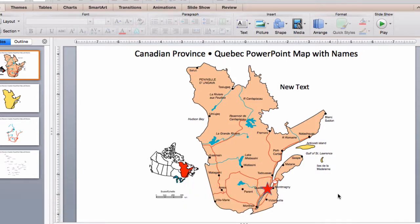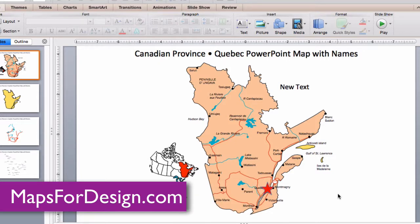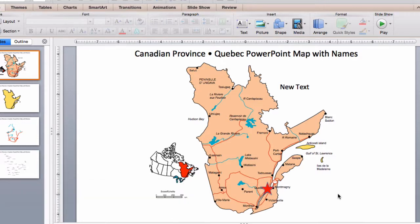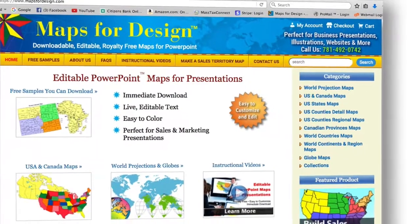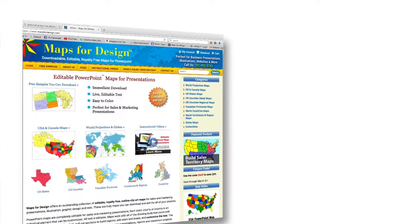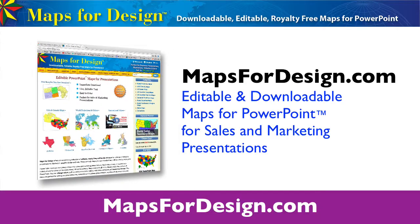Maps for Design is your home for editable, royalty-free, easy to customize, downloadable PowerPoint maps for sales, marketing, and business presentations. Great for reports, use in education, and on the web. We have a full range of U.S. and Canadian maps, world projections, U.S. states, U.S. counties, all 13 Canadian provinces and territories, world regions, and countries. Easy to download for your projects. Check us out at Maps for Design, your home for editable, downloadable PowerPoint maps for sales and marketing presentations.